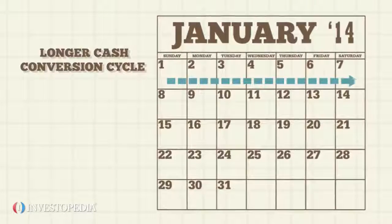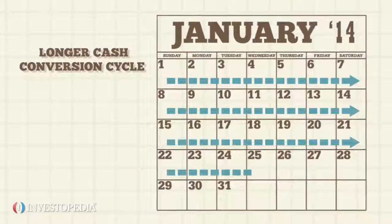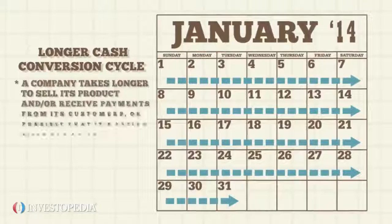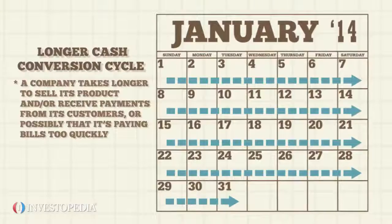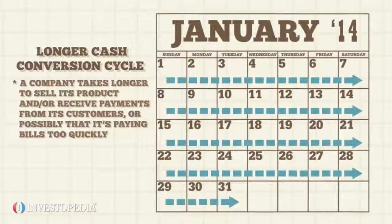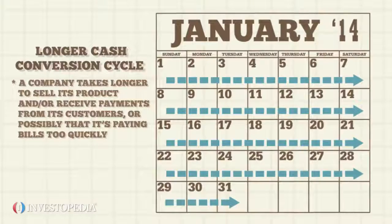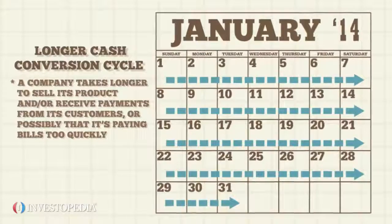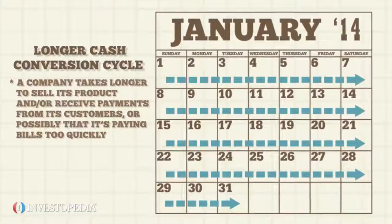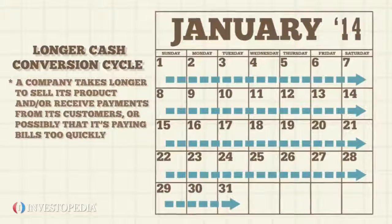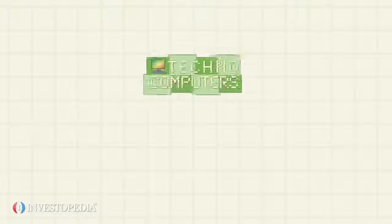A longer cash conversion cycle indicates a company takes longer to sell its product and/or receive payments from its customers, or possibly that it is paying bills too quickly.